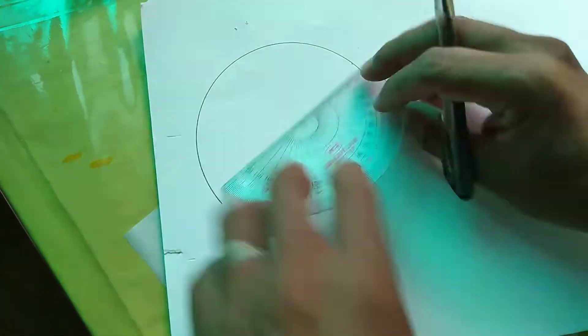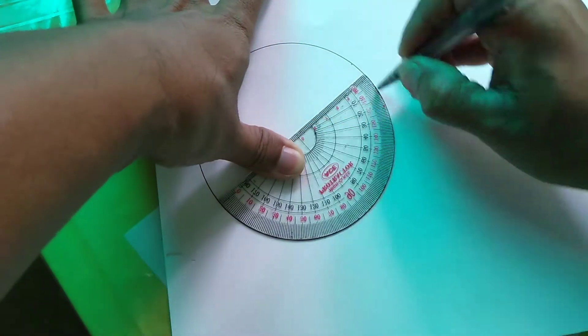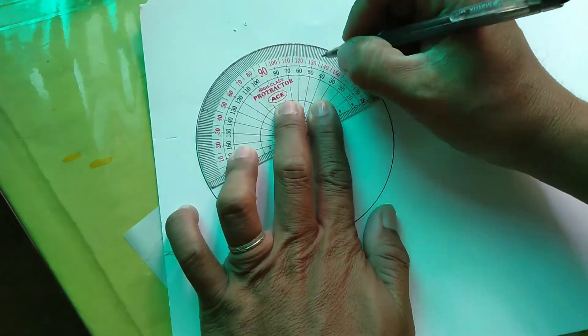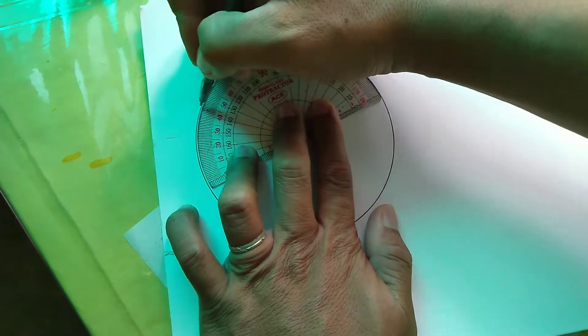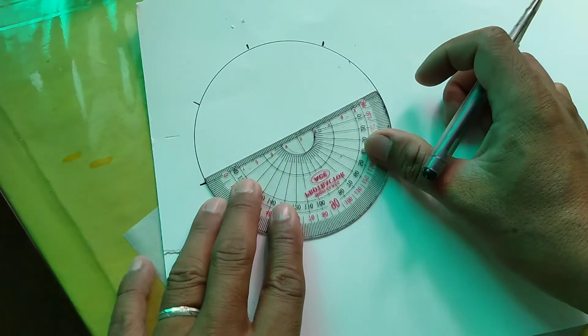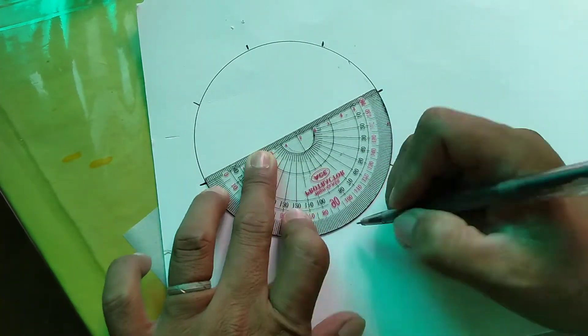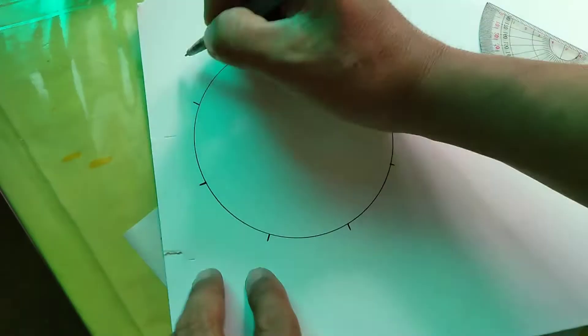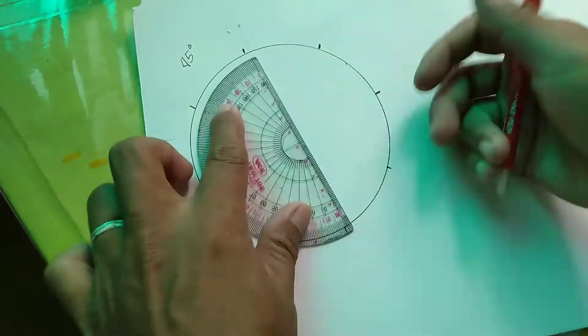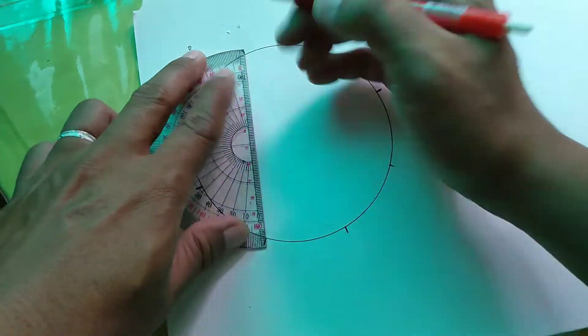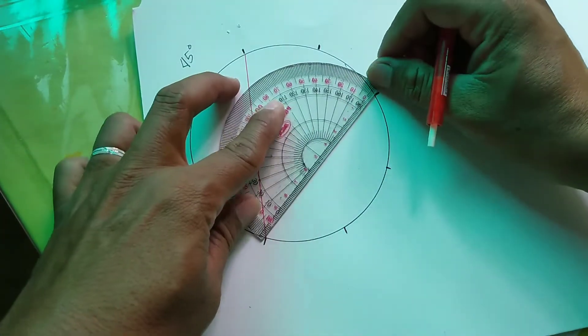The first one we're going to have is a circle. We need 0 degrees to 180 degrees. Mark it again. The first one we're going to make is 45 degrees. At 45 degrees, mark it at every 45 degrees. First, connect them.